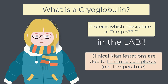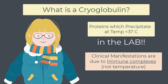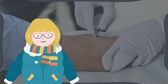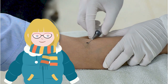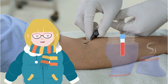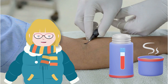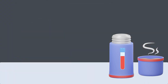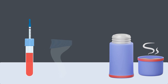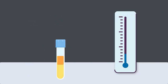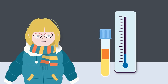Because of this laboratory definition of cryoglobulins precipitating at temperatures less than 37 degrees Celsius, in order to detect the presence of cryoglobulins, we must perform the blood test in a very specific way — keeping the blood warm as we remove it from the body and transfer it to the lab. Then when it gets to the lab, that's when we subject the sample to temperatures less than 37 degrees Celsius and see if it precipitates.